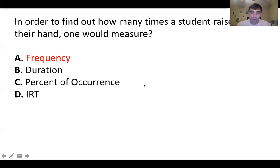Percent of occurrence. What is percent of occurrence? It's how many times a behavior occurs given a set number of tries. So if we wanted to measure how many times a student raised their hand out of 10, and they raised at eight, then our percent of occurrence would be eight out of 10 or 80%. But with frequency, it's your most basic. You're just counting it. There's no time component. There's no criteria. You're just counting.